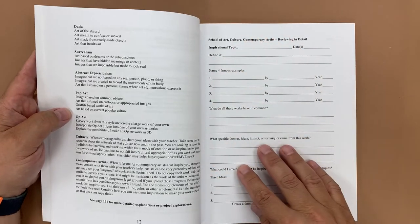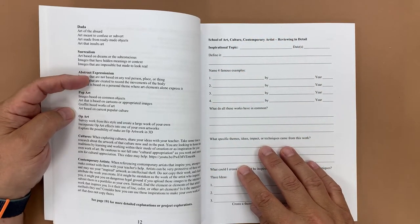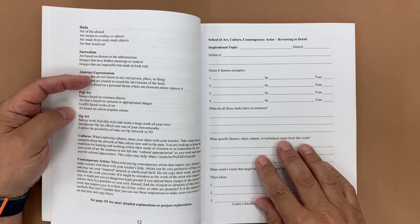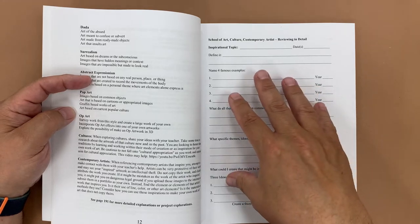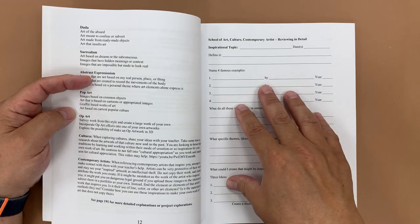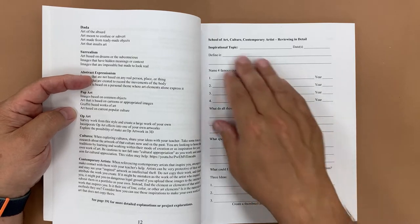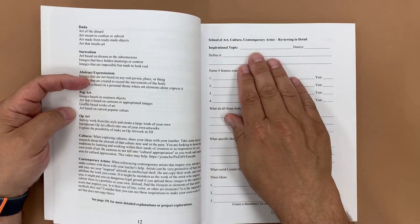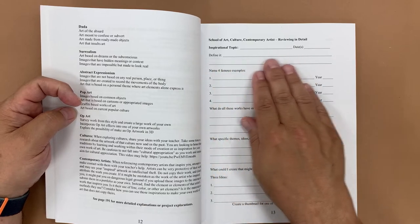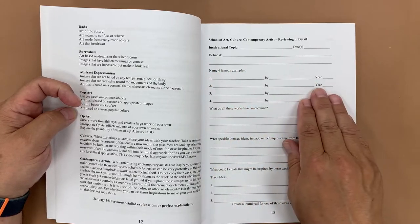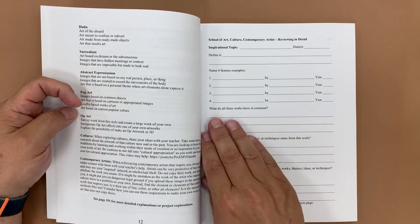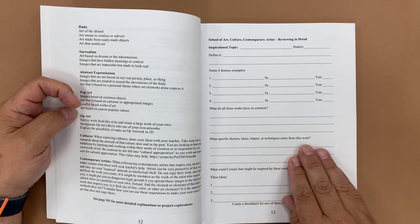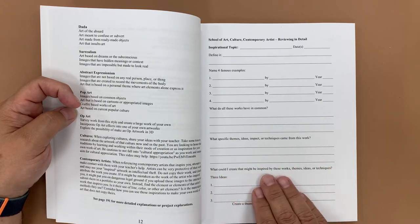So this book becomes a place for students to document their work and their research so that if perhaps you are observed by an administrator, they can see that every student will be working on something different, but that you can go back to here and see what the student is working on specifically and the documentation for their work. So School of Art, Culture, Contemporary Artists reviewing in detail. So they would pick their inspirational topic, the dates for that area, define it, four famous examples whether it is a culture or an historical movement, what do all of these works have in common, what specific themes, ideas, impacts, or techniques came from this work, and what could I create that could be inspired by these.